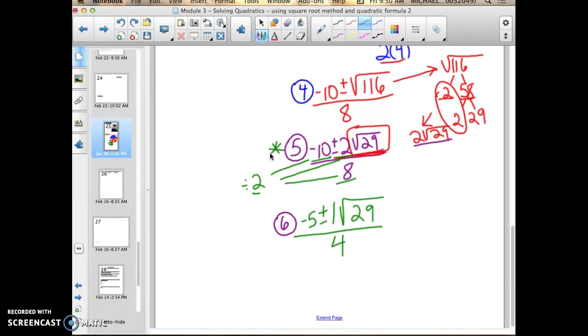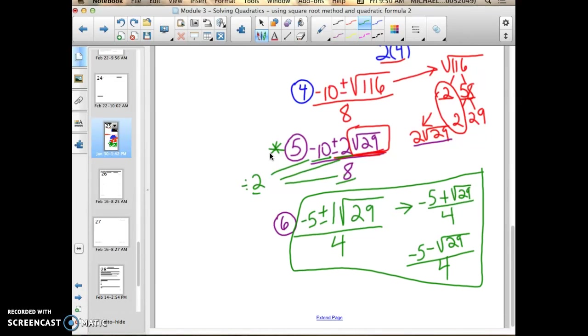So I have two answers. This can also be rewritten as negative 5 plus the square root of 29 over 4, and negative 5 minus the square root of 29 over 4. Two different ways you would see it, but all of these, or you could write it just negative 5 plus or minus the square root of 29 over 4. All of these can be my answers.